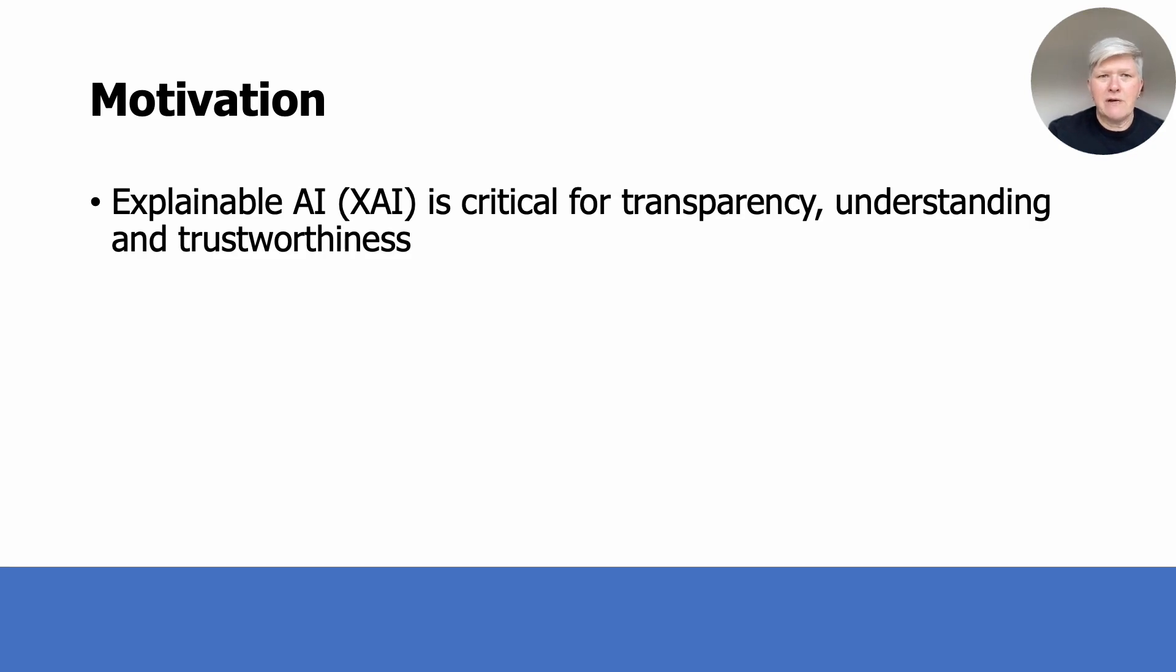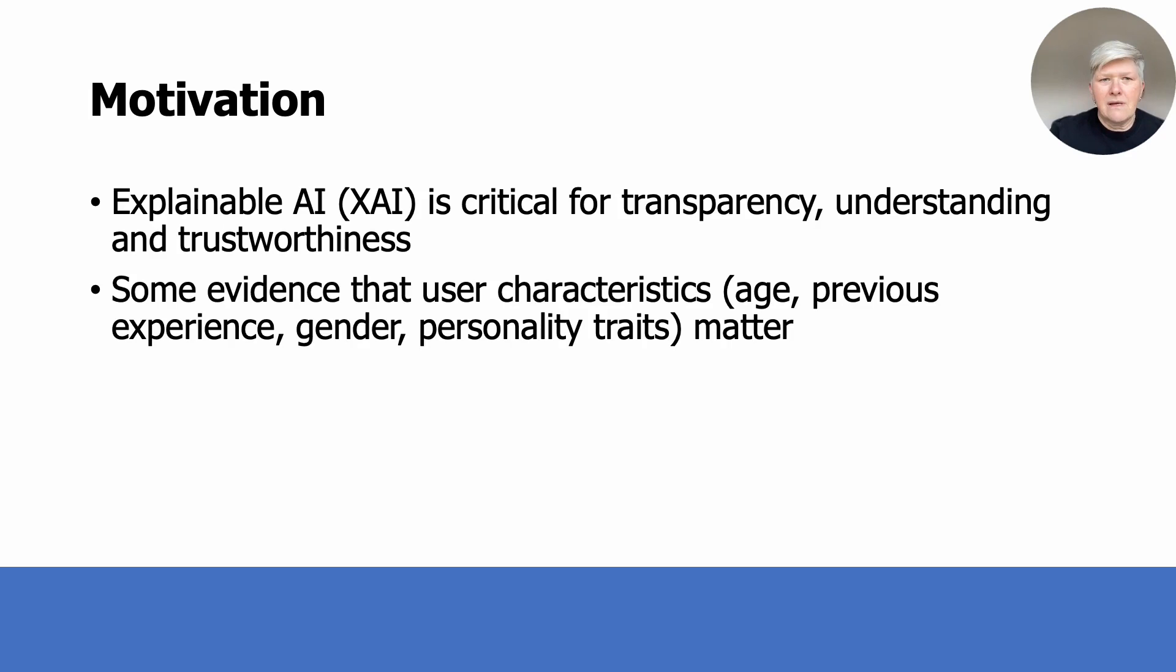Why were we doing this work? We have seen a rise in research that focuses on explainable AI or XAI in order to open up black box AI models and help users with understanding and appropriately trusting the decisions that an AI makes. Previous work, for example by Ehsan et al., Zhang Yao and myself, and others have provided some evidence that user characteristics might matter in system use and explanations. Age, previous experience, gender, and personality traits have been repeatedly suggested as important.